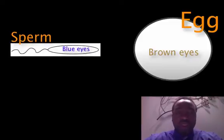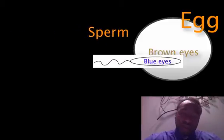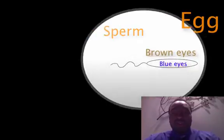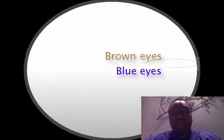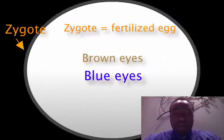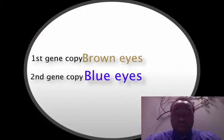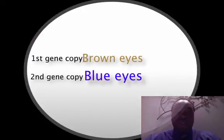As we already know, the sperm enters the egg. This fertilized egg is known as a zygote, which now has two copies of the eye color gene — one from each parent. Those copies of genes are called alleles.